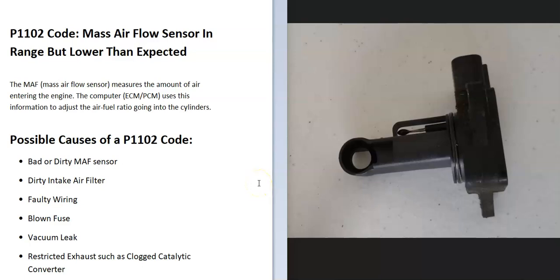Today I'm talking about a P1102 code — what it is and how you go about fixing it. A P1102 code is a mass airflow sensor in range, but lower than expected.